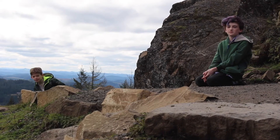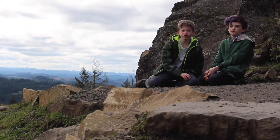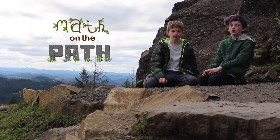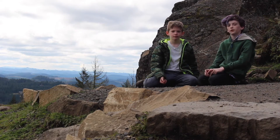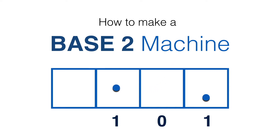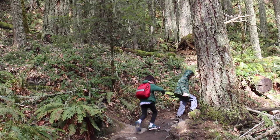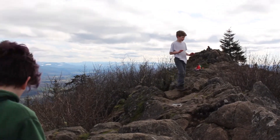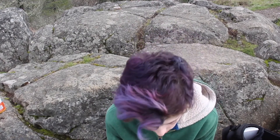Hey guys, Bubbin here. Today it's time for math on the path. You already know how to take a number and turn it into a code, but now we're going to teach you how to work backwards and turn a code into a number. We've learned how to make a base 2 machine — we put in a bunch of dots, do a bunch of explosions, and end up with a special code. But what if we have a code and we want to get back to the number of dots we put into the machine? That's what we're going to talk about in this video.